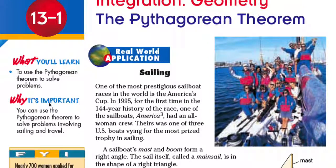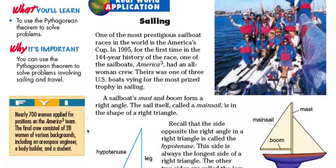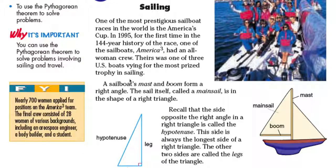Why is this important? Because you can use the Pythagorean theorem to solve problems involving sailing and travel. Let's take a look at this real-world application on sailing. One of the most prestigious sailboat races in the world is the America's Cup. In 1995, for the first time in the 144-year history of the race, one of the sailboats, America 3, had an all-women crew. Theirs was one of three U.S. boats vying for the most prized trophy in sailing.